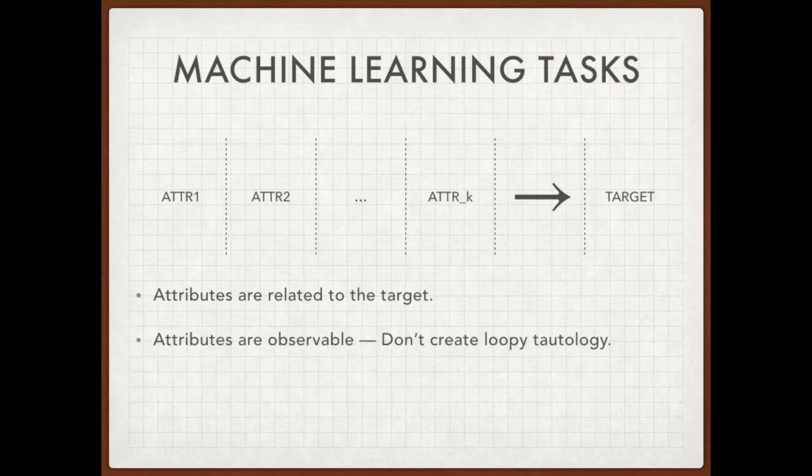The second essential prerequisite of applying machine learning methods is that you should observe data about the attributes and the target. The observability refers to two-fold meanings here. You may have already heard terms such as training and test stages of a data model, which refers to two stages of a life cycle of a data model.